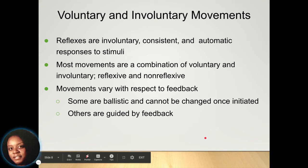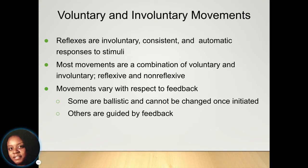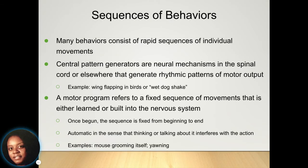You have voluntary and involuntary movements in your body. Your reflexes are involuntary, consistent, and automatic movements. Most movements are a combination of voluntary and involuntary. Your movements can vary with respect to feedback — some are guided by feedback and some are ballistic and cannot be changed once initiated. Your behaviors are consistent and rapid sequences of movements.